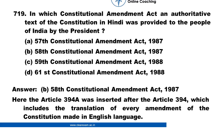The answer is b. 58th Constitutional Amendment Act in 1987. Here, Article 394A was inserted after Article 394, which includes the translation of every amendment of the Constitution made in English language.